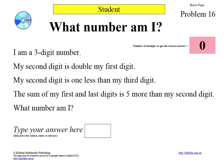Let's try this one. I am a three digit number. My second digit is double my first digit. My second digit is one less than my third digit. The sum of my first and last digits is five more than my second digit. What number am I?